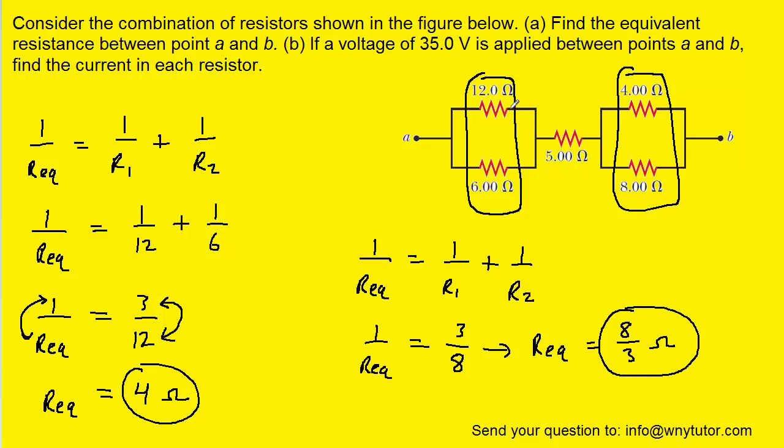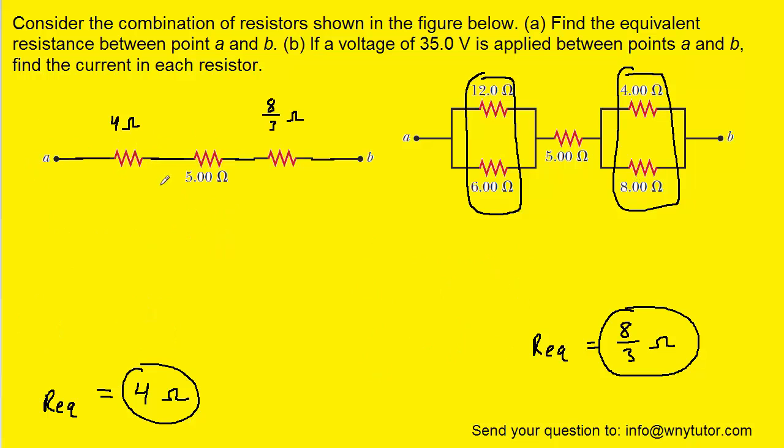Once we have figured out those two equivalent resistances, we can actually redraw the circuit. We're going to take the two resistors that are in parallel and draw them as a single resistor, and we'll do the same thing with these two resistors. Here is the 4 ohm resistor that came from the first set of parallel resistors, and this is the 8 thirds ohm resistor that came from the second set of parallel resistors.